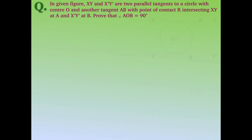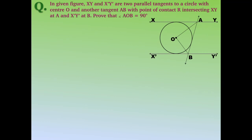The next question: in the given figure, XY and X'Y' are two parallel tangents to a circle with center O, and another tangent AB with point of contact R intersects XY at A and X'Y' at B. Prove that angle AOB is 90 degrees.